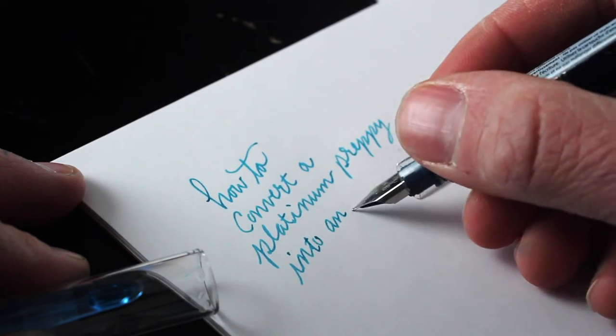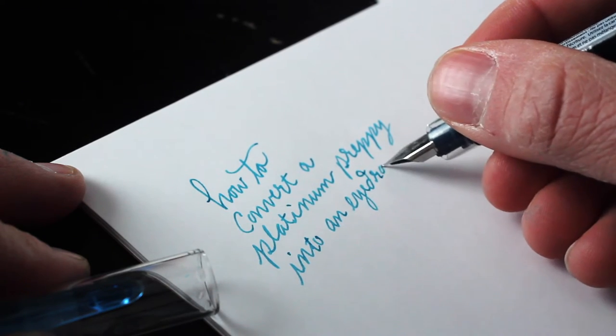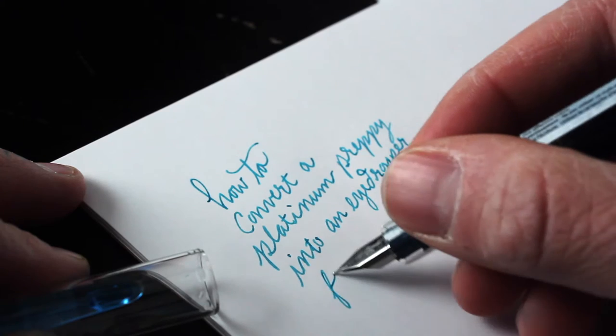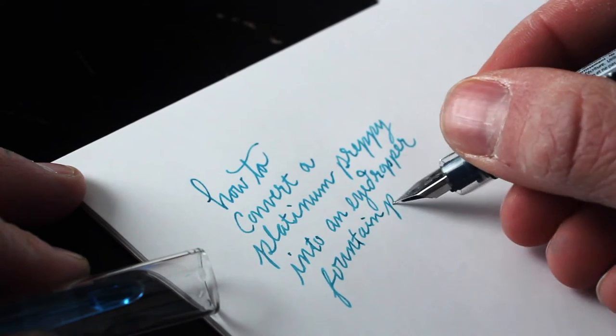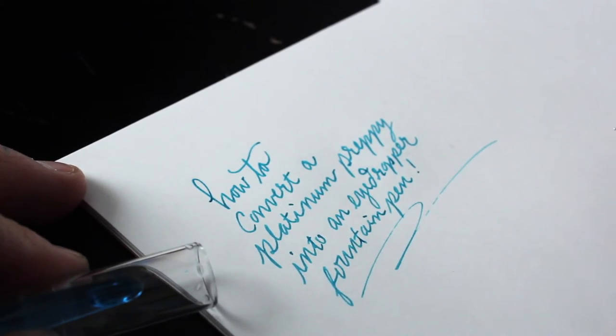Such as the case with this Platinum Preppy pen that we're writing with here. It does come with a cartridge to start off with, but we are going to ditch the cartridge and fill up the entire barrel with fountain pen ink. So that's what we're going to show you here today, and we're going to get started with gathering our items together.